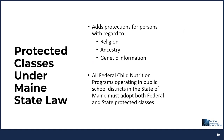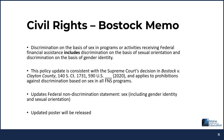Maine State Law has additional protected classes. Maine State Law adds protections for persons with regard to religion, ancestry, and genetic information. All federal child nutrition programs operating in public school districts in the state of Maine must adopt both federal and state protected classes. The Bostock Memo clarifies that discrimination on the basis of sex in programs or activities receiving federal financial assistance includes discrimination on the basis of sexual orientation and gender identity. This policy update is consistent with the Supreme Court's decision in Bostock v. Clayton County and applies to prohibitions against discrimination based on sex in all FNS programs.